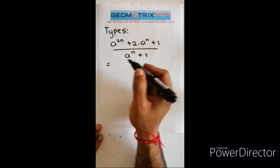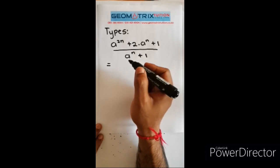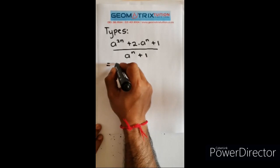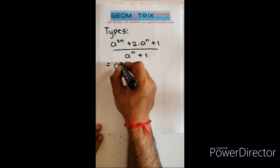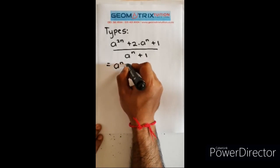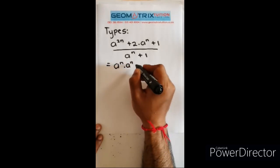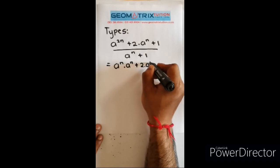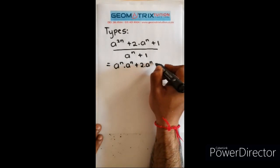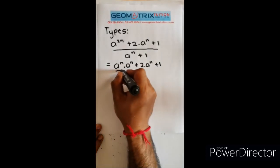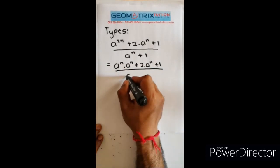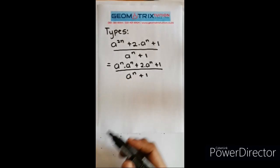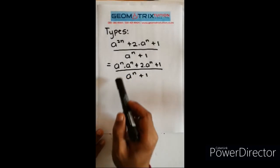Once you break down the bases, life becomes so easy because a to the 2n can be rewritten as a to the n times by a to the n plus 2 times a to the n plus 1 all over a to the n plus 1.